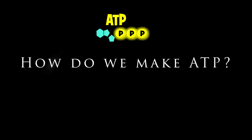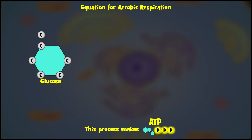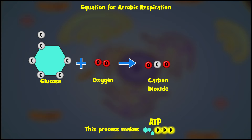But how do we make ATP? In this video series, we will focus on the breakdown of sugar, particularly glucose, during the process of aerobic respiration, which uses oxygen. During aerobic respiration, glucose from our food and oxygen from the air we breathe are used to make ATP. This process also makes the carbon dioxide that we breathe out and water as waste products. Check out the equation.